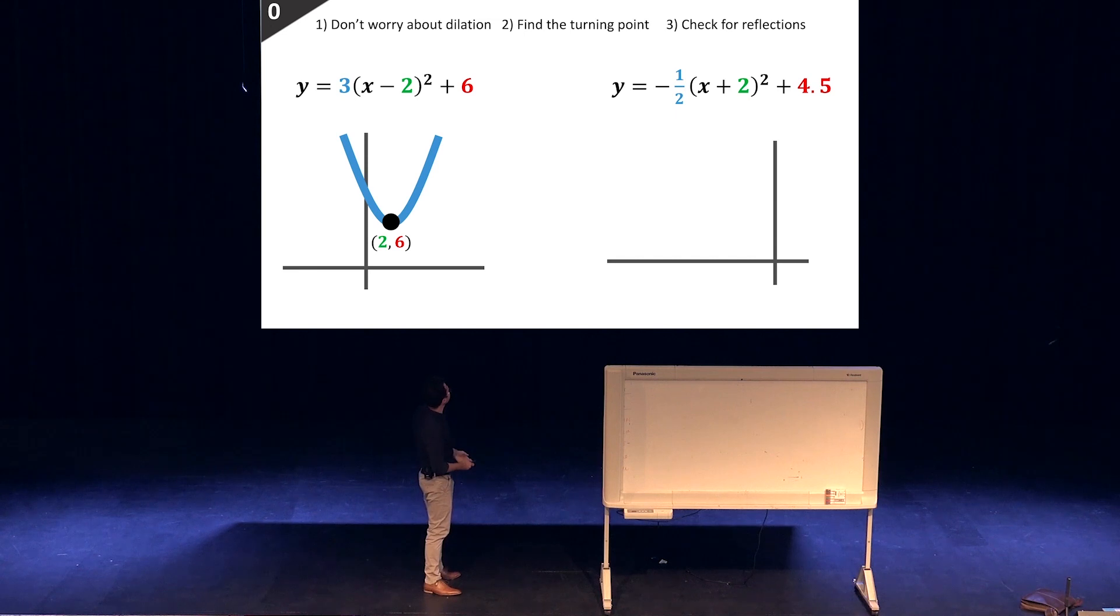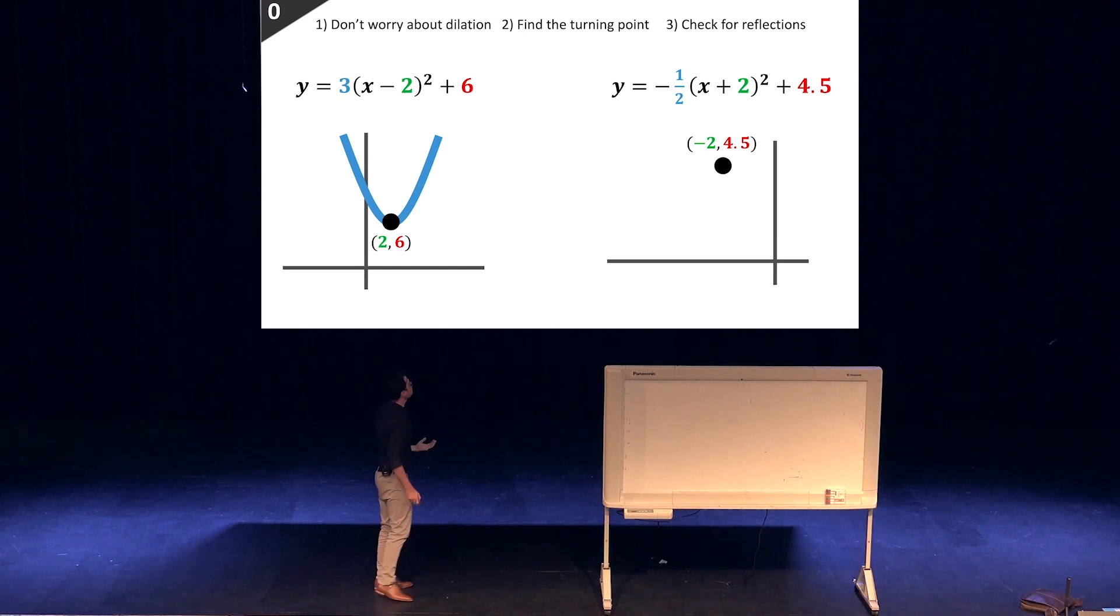And then with this one, same deal, we don't worry about the dilation, the half. We chuck in the turning point, so it'd be (-2, 4.5), put that in. And we know it's a parabola, but because there's a negative in front, it's going to be upside down, so we chuck that in as well.